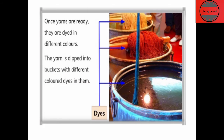Once the yarns are ready — once the process of making fiber into yarn is completed — we dye them with different colors according to our need. We just take a bucket, pour our desired color, and dip the yarn into it. After some hours we remove the yarn out of the bucket and the yarn becomes colorful. In this way we dye yarn with the help of various colorful dyes according to our needs.